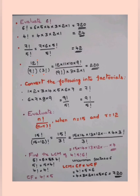If it is 12! / (9! × 3!), check the denominator first — the highest number is 9. Write 12! as 12 × 11 × 10 × 9!, and write 9! in the denominator so it cancels. Then expand 3! as 3 × 2 × 1. After cancellation, multiply the remaining numbers: 12 × 11 × 10, then divide by 3 × 2 × 1, to get the answer.